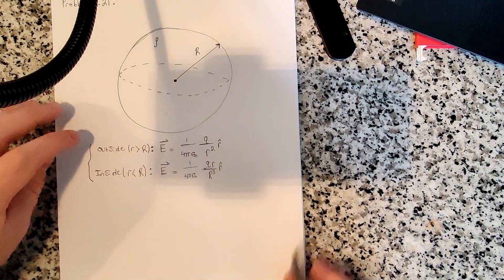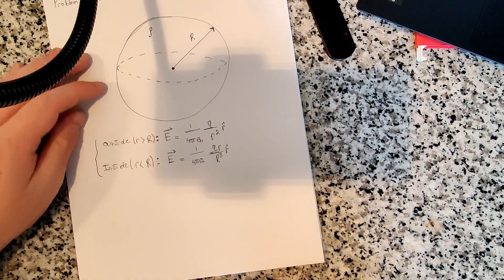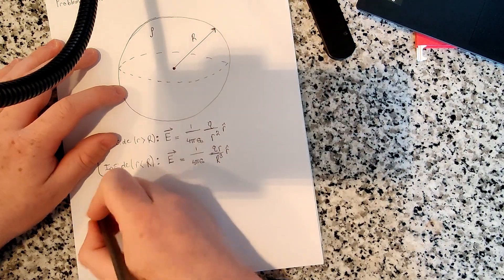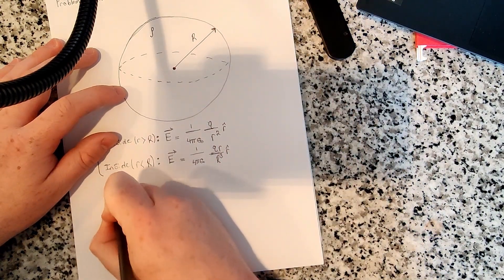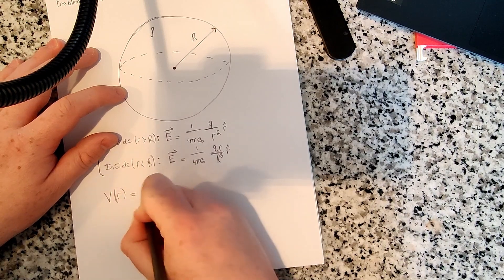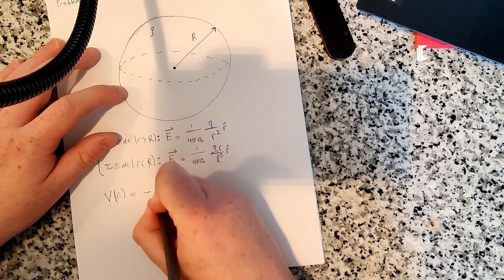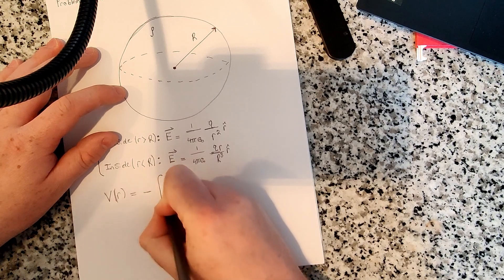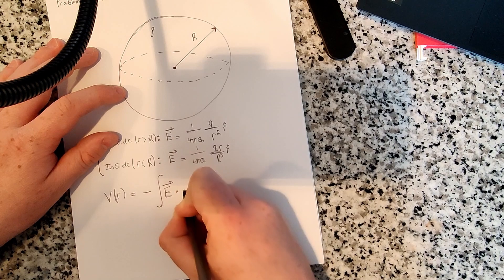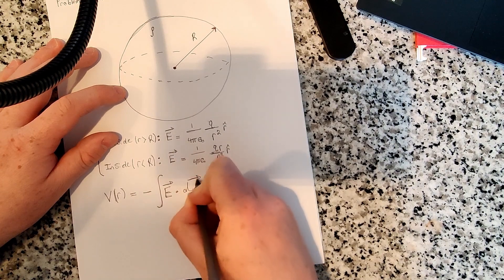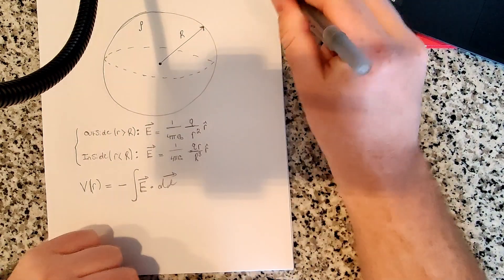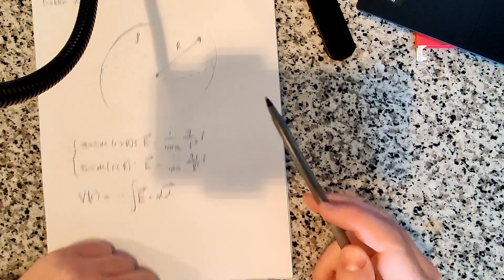So how do we find the potential? It says to use infinity as our reference point. The equation for finding the potential is V of r equals minus the integral of E, the electric field, dotted with dl. If infinity is our reference point, then we're measuring from infinity.